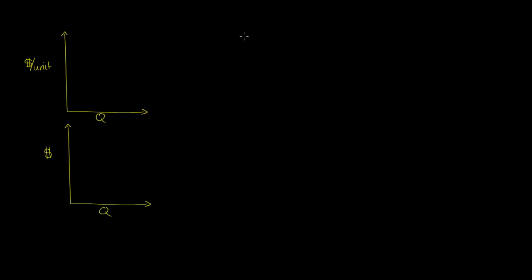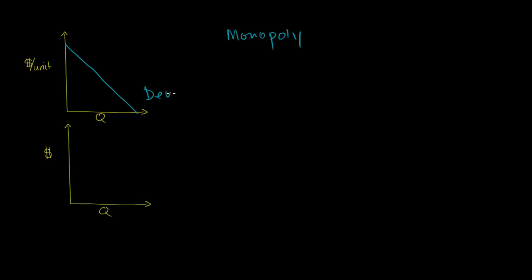What I want to do in this video is review the revenue and cost graphs for a monopoly. So let's draw the demand curve for the monopoly. We're just going to speak in general terms here, for whatever product we're the only person that can produce. Let's say the demand curve looks like this — I'm just going to draw it as a line, so we have a linear demand curve.